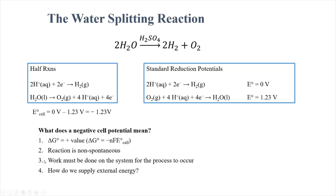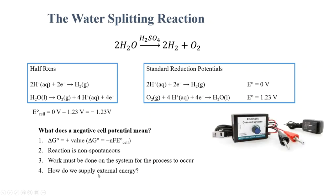With a positive delta G, the reaction is non-spontaneous, so we have to impart work on the system — put energy in — for this process to occur. The big question is: how do we supply that external energy? In our virtual lab, we'll use a constant current system that plugs into the wall.